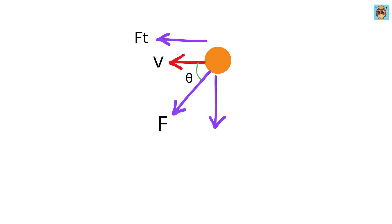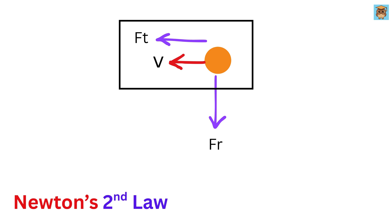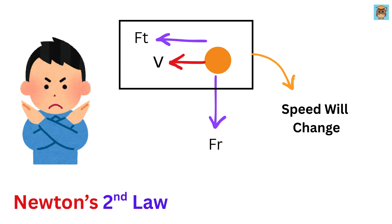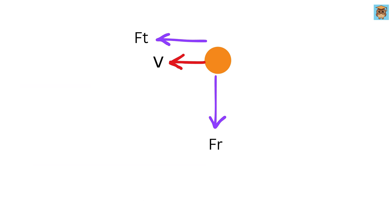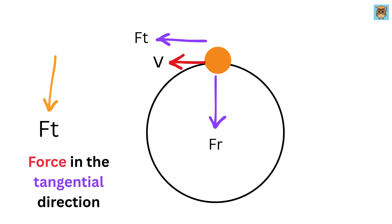One component of the force would be in the direction of the velocity and the other component would be perpendicular to it. From Newton's second law, if a force is applied parallel to the motion of the object, its speed will change — which we don't want, because we are discussing uniform circular motion where v must be constant. Thus the parallel or tangential component of force must be zero.